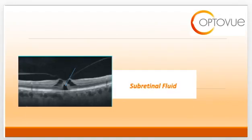Another complication involves the development of subretinal fluid. We oftentimes think about vitreo-macular traction affecting the superficial retina and the inner retinal space; however, in cases of chronic or significant traction, the outer retinal tissue can become involved, resulting in subretinal fluid formation. The hyporeflective area that the blue arrow is pointing to is this subretinal fluid. What we worry about is that the ISOS junction is usually affected, resulting in significant reduction in visual acuity.